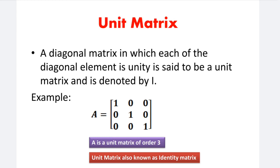A is a unit matrix of order 3. In this case, what is the unit matrix? The order is 3, because 3 rows equal 3 columns. Unit matrix is also known as identity matrix. The first name of the unit matrix is identity matrix.